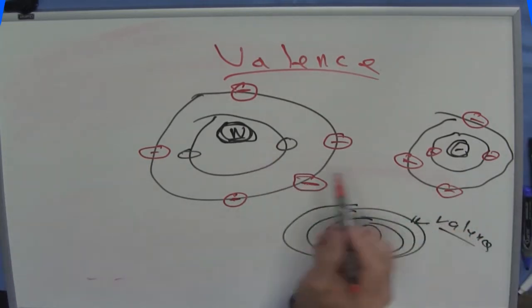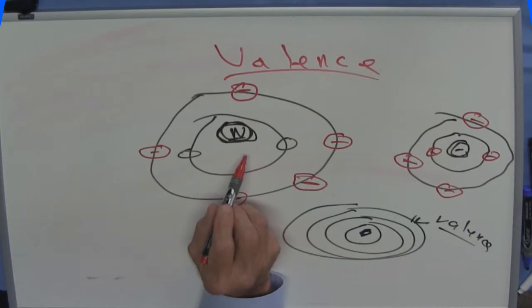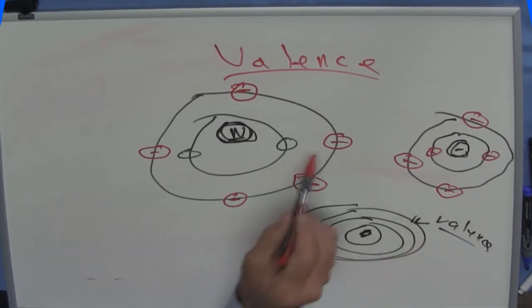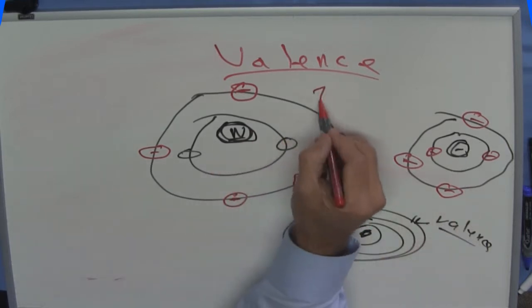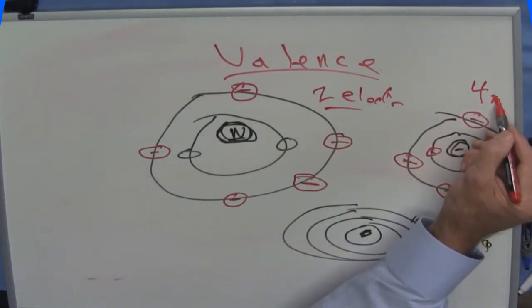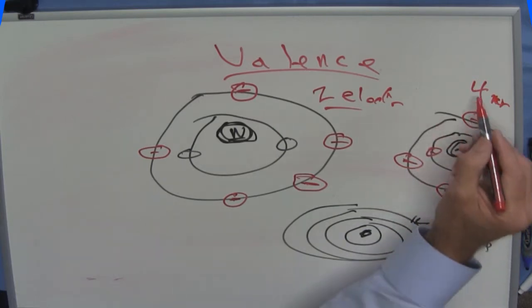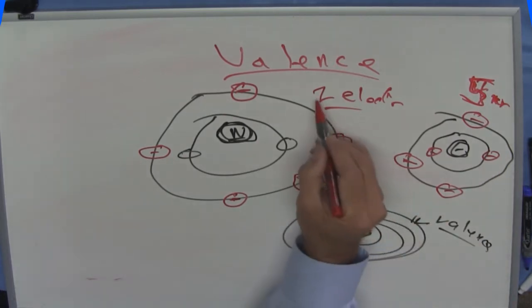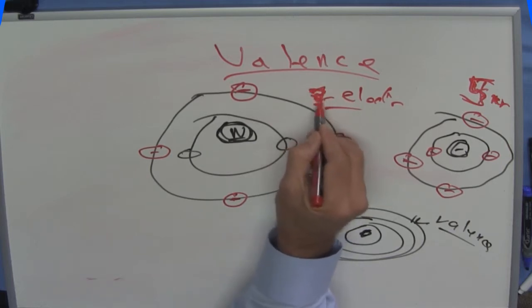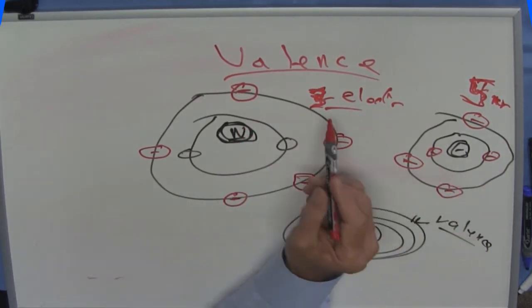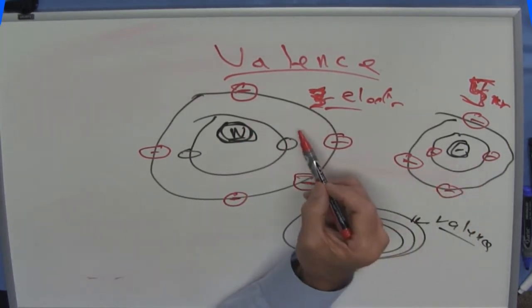Now, if these atoms were close to each other, one of the things that would happen is this one is less stable and it would be easier - this guy needs two more electrons. This guy over here needs five more electrons because it's only got three. This one needs three more. What is it easier to do? For this one to gain five or this one to gain three? It's easier to gain three.